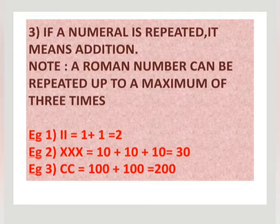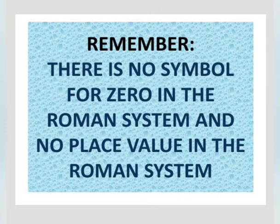Because III, you know 1 plus 1 plus 1 is equal to 3. Even X is also 3 times. After that, we are not at all writing. Remember, there is no symbol for 0 in Roman system and there is no place value system.